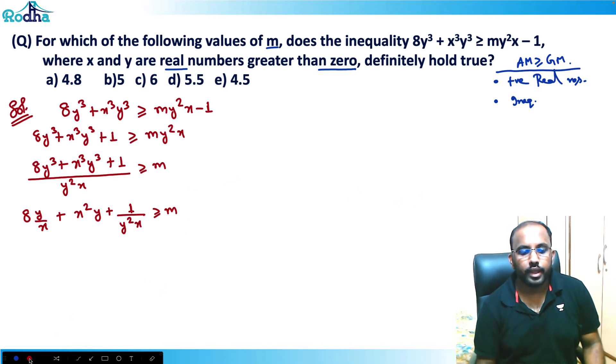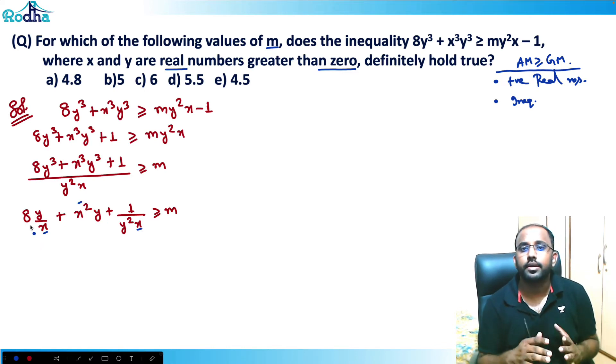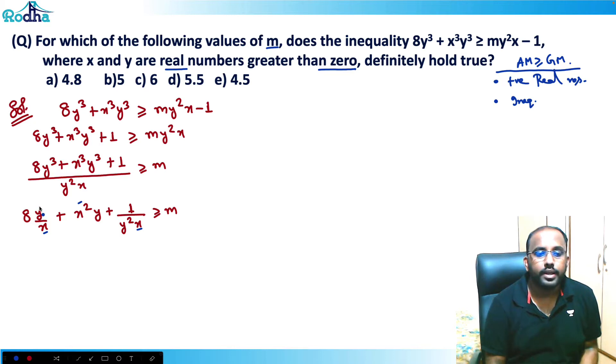Now let's check that if we are in full good condition to apply AM-GM here. So just count the powers here. Because in GM, all variables should get multiplied and should get cancelled. So x has got 1 and 2 power in denominator and x has 2 power in numerator, so x will get cancelled. y has got 1 and 2 power in numerator and 2 in denominator, so y will get cancelled. Perfect situation to apply AM-GM now.